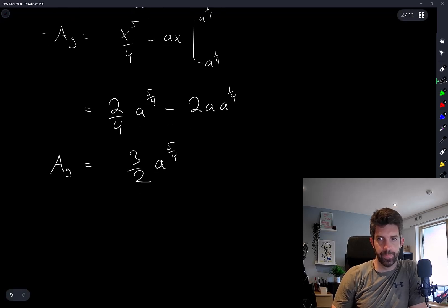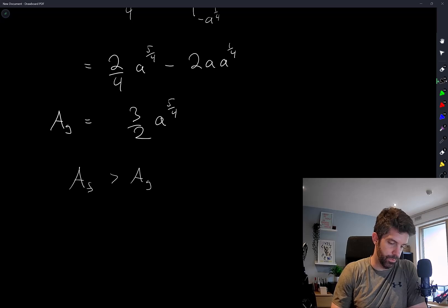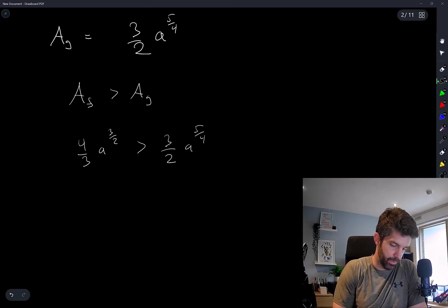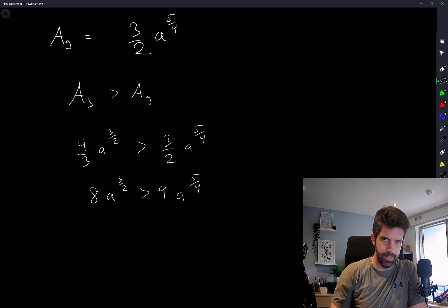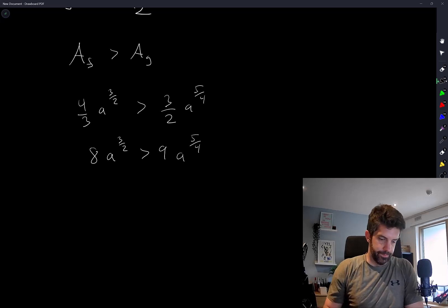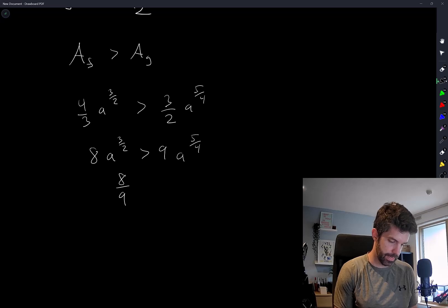And we are asked for when Af is bigger than Ag. So what was Af again, 4 over 3 a to the 3 over 2, greater than 3 over 2 a to the 5 over 4. So we have 8 a to the 3 over 2 is greater than 9 a to the 5 over 4.